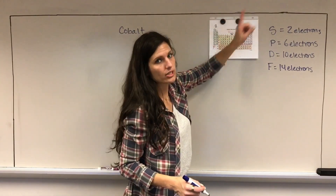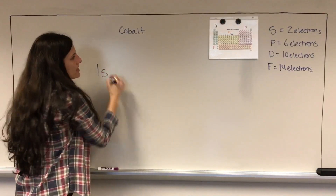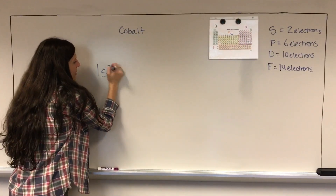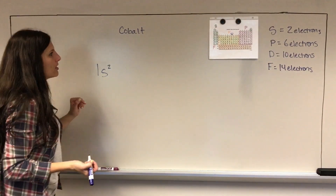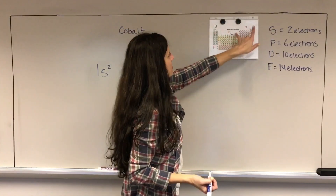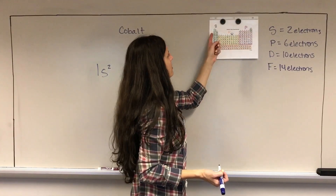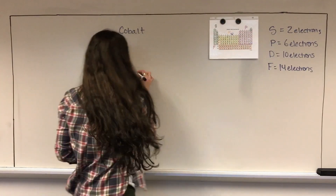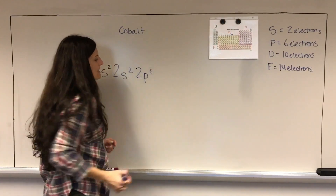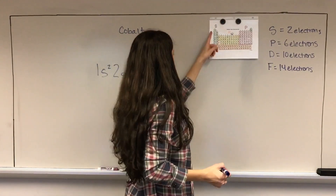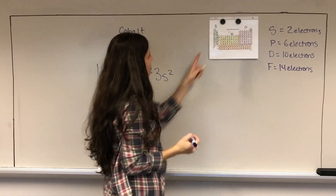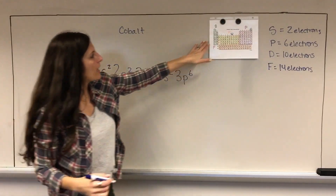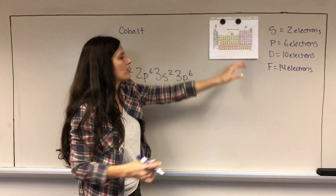For cobalt, I'm going to start up here. My very first subshell is the 1s subshell. Because cobalt is past that subshell, it's full, so it has two electrons - I'll put a superscript 2 on it. After the 1s, drop down to the next row and read left to right: this is the 2s, which has to be full, then the 2p, which is also full - since p is full it has six electrons, so the exponent is 6. Next row: 3s is full, and 3p is full.